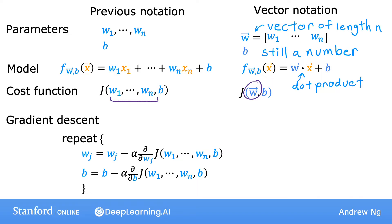Here's what gradient descent looks like. We're going to repeatedly update each parameter wj to be wj minus alpha times the derivative of the cost J, where J has parameters w1 through wn and b.